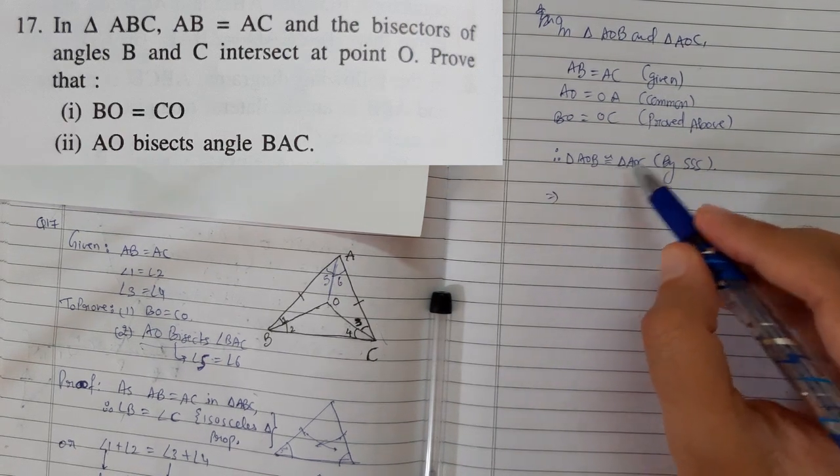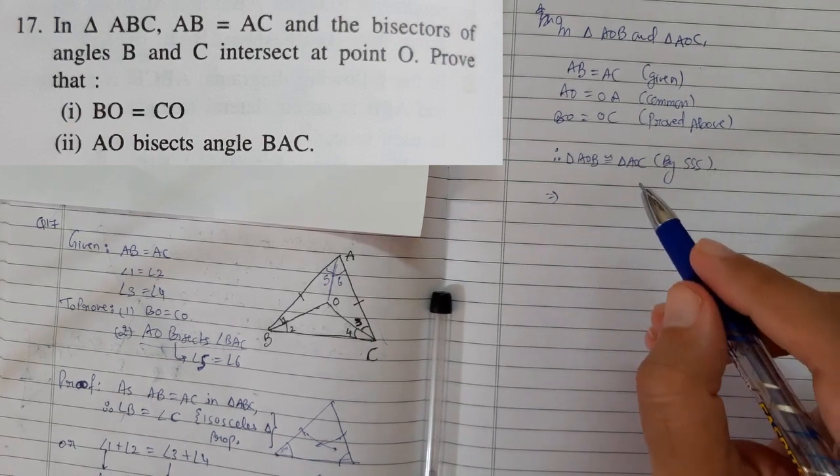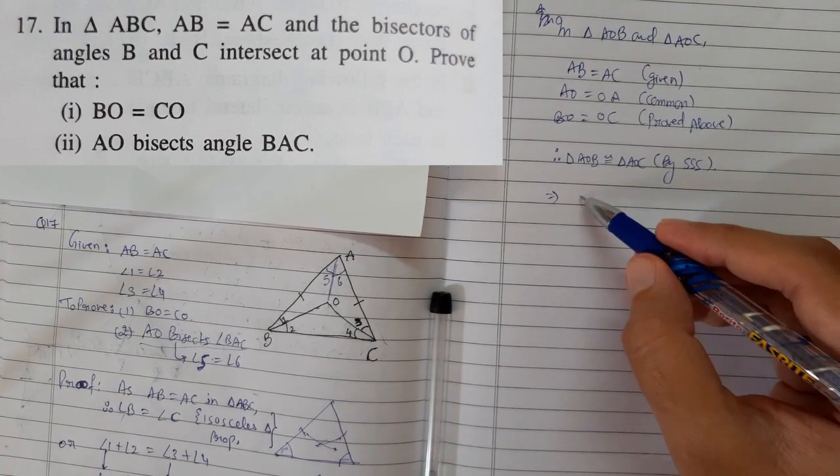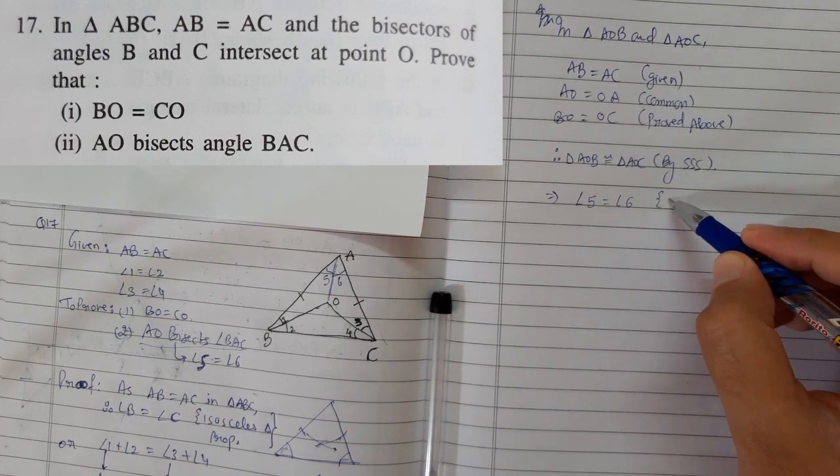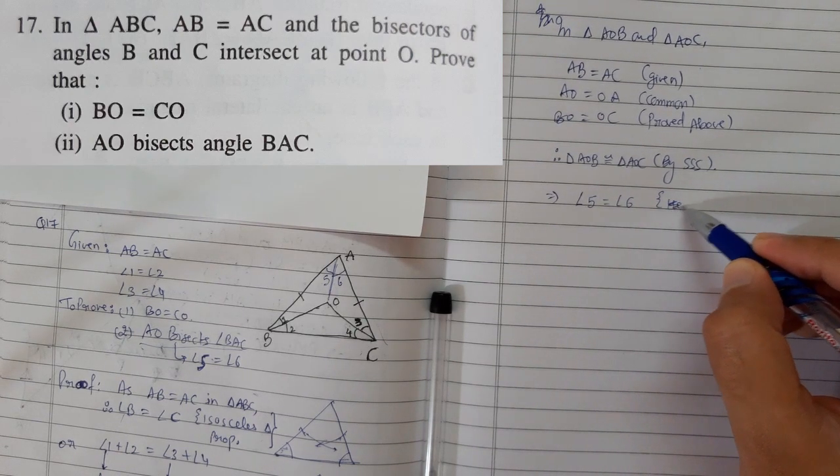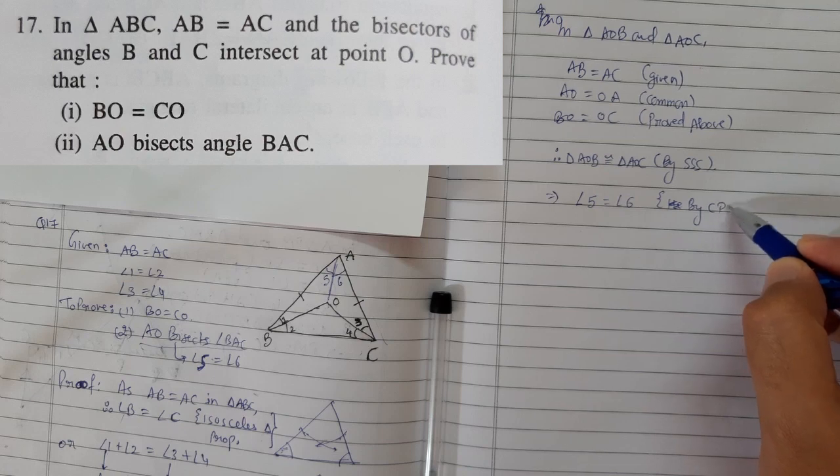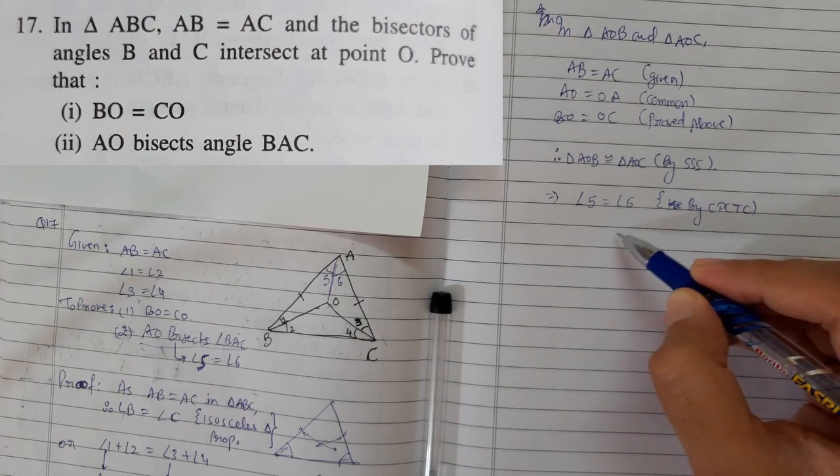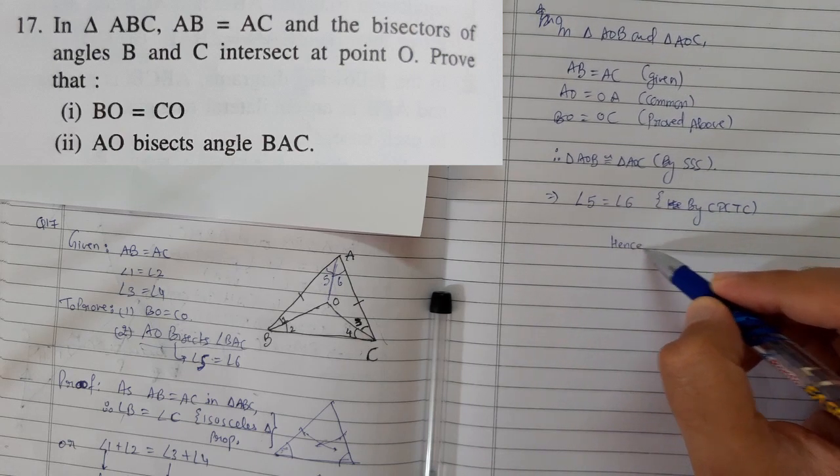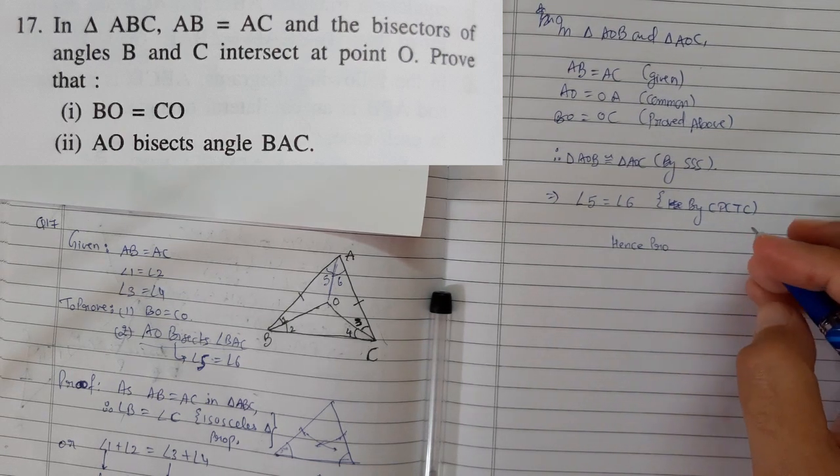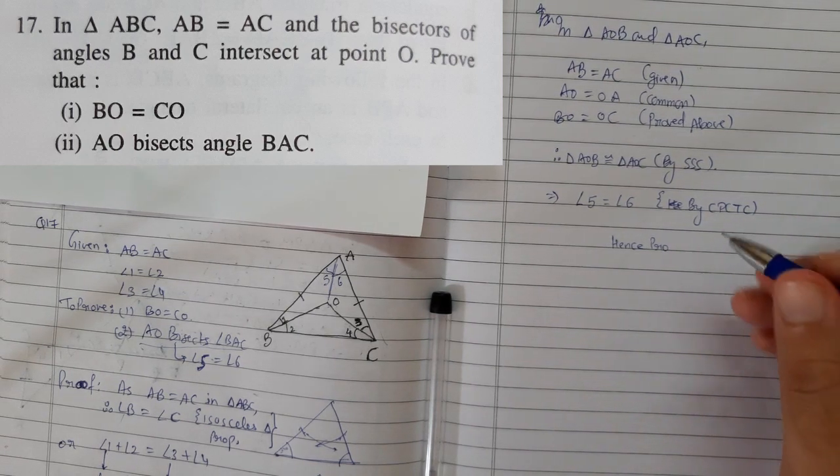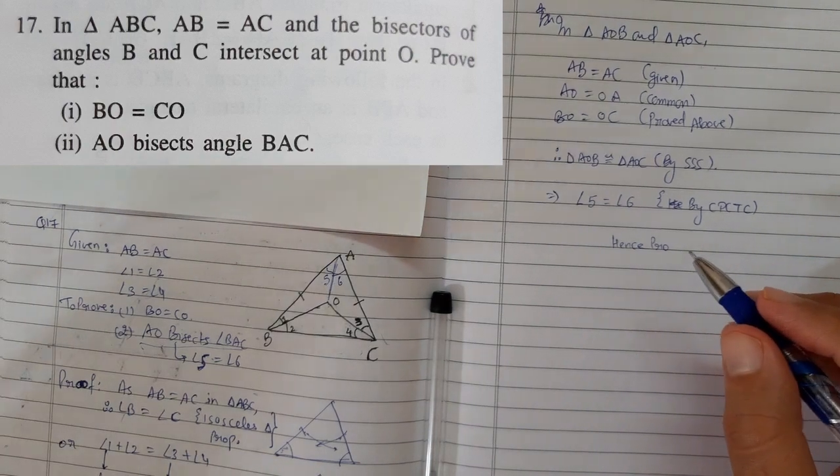Therefore, if two triangles are congruent, then the remaining parts are also equal. Therefore, I can say angle 5 is equal to angle 6 by CPCTC. Hence proved. That's it for this question. That's it in this video. We will see you in the next video. Thank you for watching.